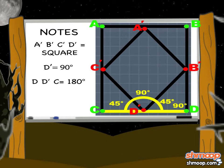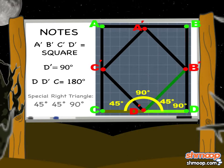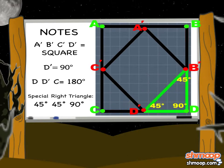If we do that with all the angles, we'll see that our triangle B'D'D' is a special right triangle, a 45-45-90 triangle.